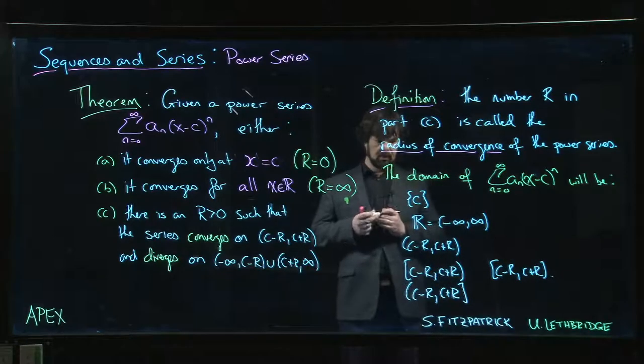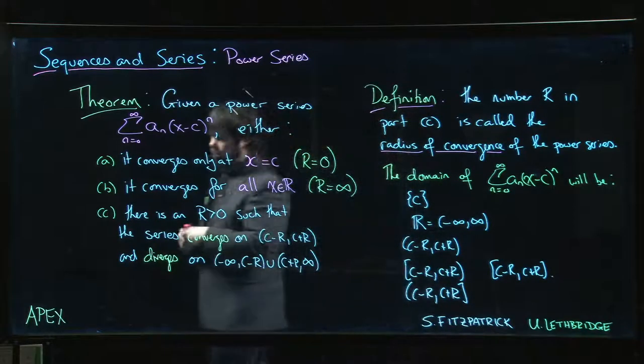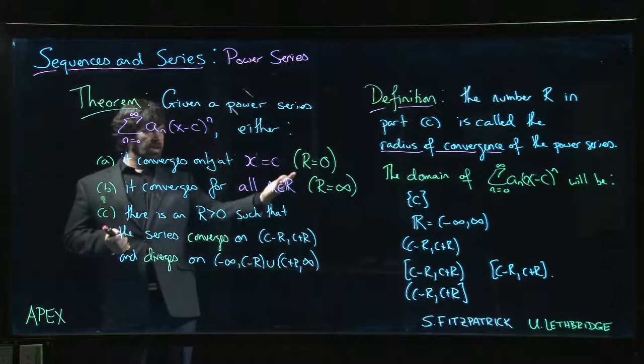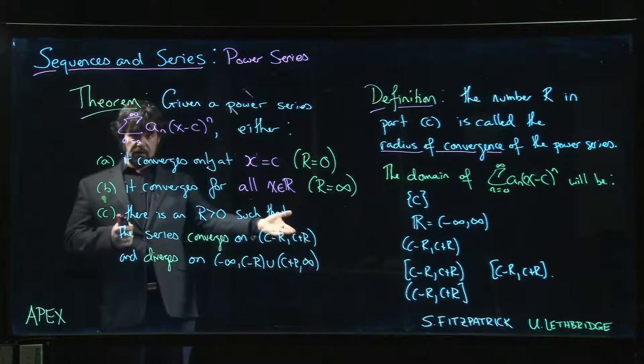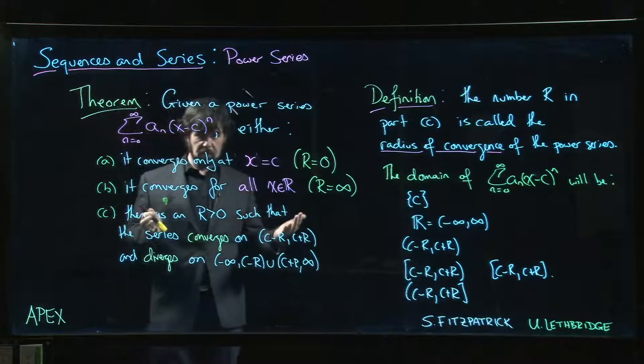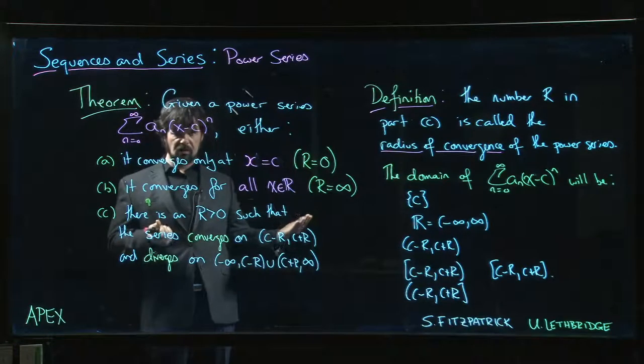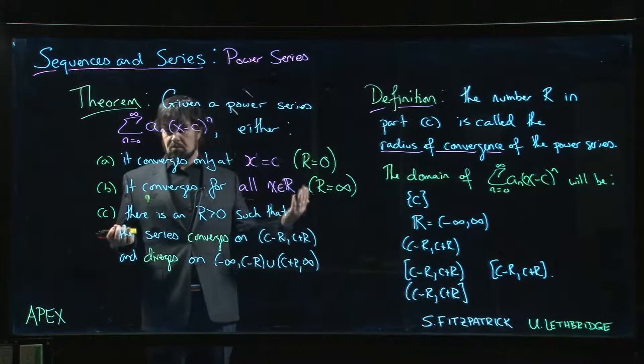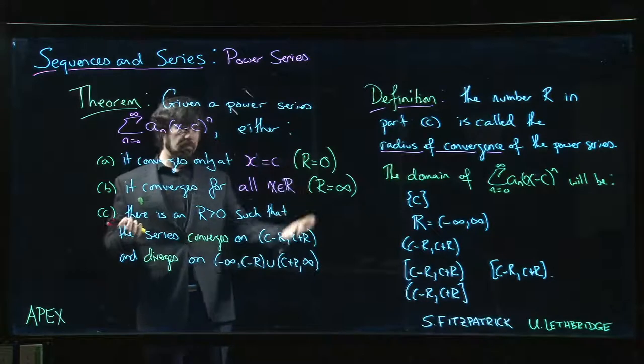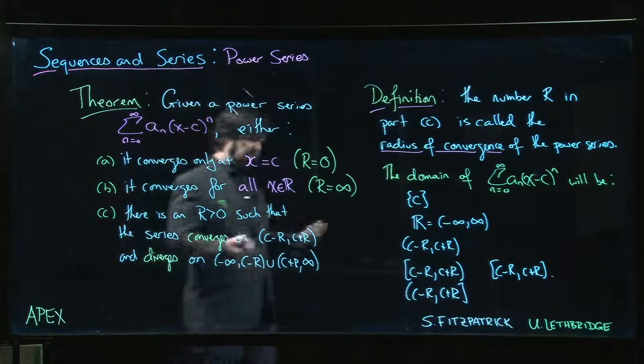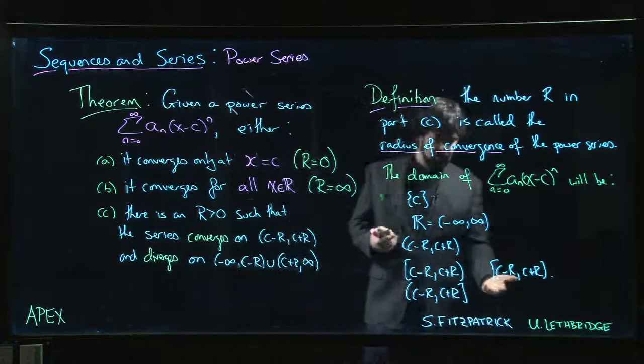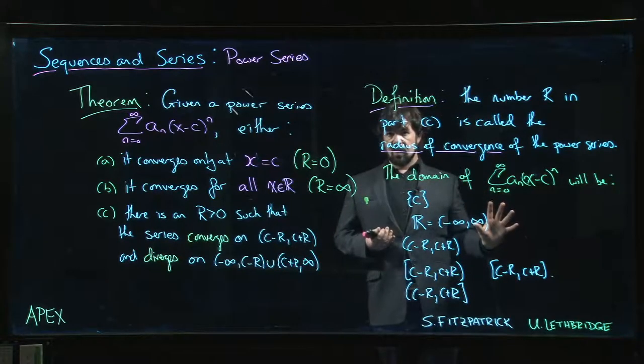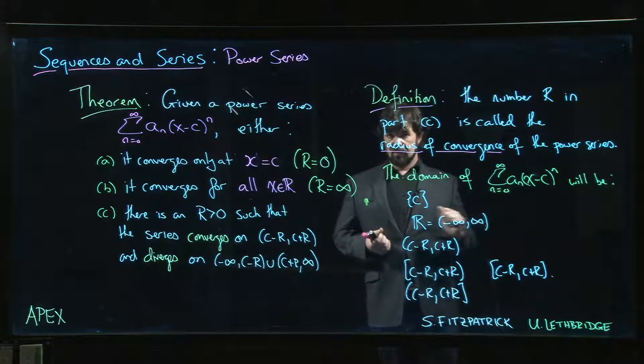So this is typically the first question that you try to answer when you're handed a new power series: what is the radius of convergence, what is the interval of convergence? These are pretty typical questions because you want to know where your function is defined if you're defining a function this way. Whenever somebody hands you a new function, it's reasonable to ask what's the domain. This tells us what the domain is going to look like. What it doesn't yet tell us is how to find the domain. We'll get to that in the next video.